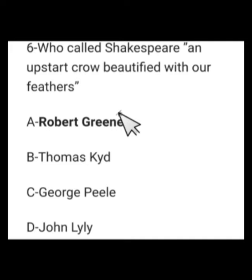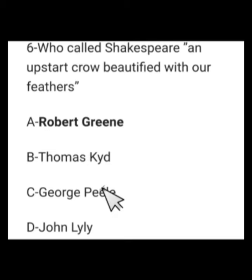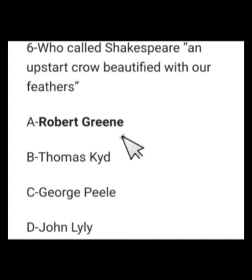Number 6: Who called Shakespeare 'an upstart crow beautified with our feathers'? Options: Robert Greene, Thomas Kyd, George Peele, or John Lyly. The right option is A — Robert Greene, who was one of the University Wits. University Wits was a phrase used for late 16th-century playwrights who were educated people during the Renaissance period. Robert Greene was against Shakespeare, viewing him as an uneducated person.